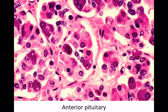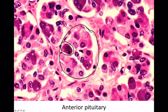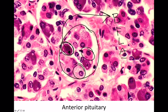The anterior lobe is a glandular organ — under the microscope it has a clear glandular structure, and it's where most of the action is. When we talk about endocrine diseases of the pituitary, we're almost always talking about the anterior lobe. A helpful mnemonic is B-flat: basophils secrete FSH, LH, ACTH, and TSH. Acidophils secrete everything else — growth hormone and prolactin. Chromophobes, afraid of the stain, don't really secrete anything.